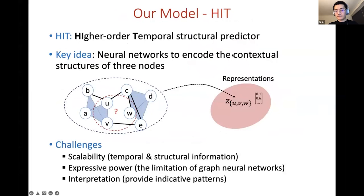Now we introduce our model HIT to solve these questions. HIT refers to higher order temporal structure predictor. Our key idea is actually very simple. We just want to use neural networks to encode the contextual structure around the query three nodes to learn its representation, and the representation can be further used to make the prediction to answer the previous three questions. Of course to implement this idea we need to address three challenges: model scalability, expressivity, and model interpretation.